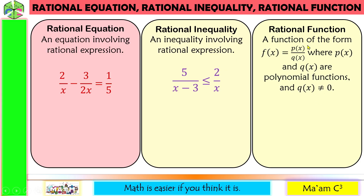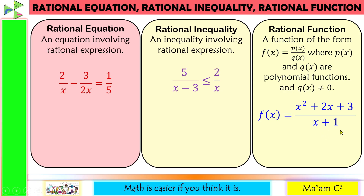For the rational function, both numerator and denominator must be a polynomial function. Let's take a look at the numerator — it is a polynomial. The denominator is also a polynomial. So polynomial divided by a polynomial. Next, there should be the name of a function, so the name here is f(x), and there is also an equal sign. For rational equation and rational inequality, we solve for the values of x. For rational function, we are given the relationship of x and y.